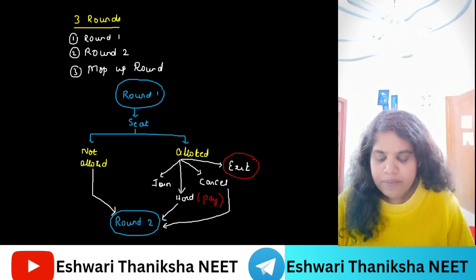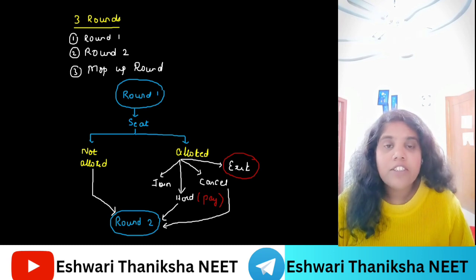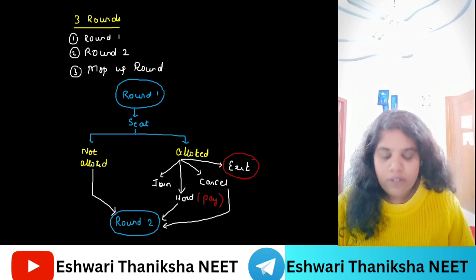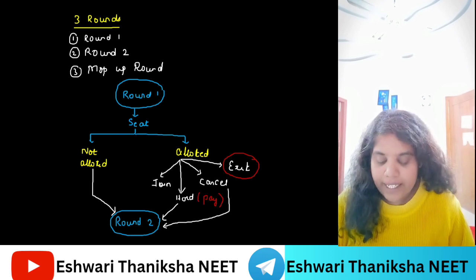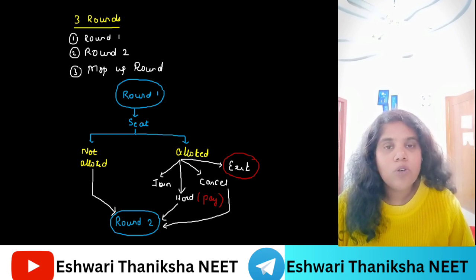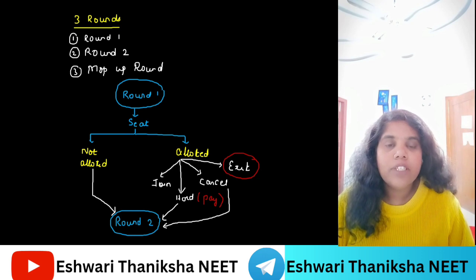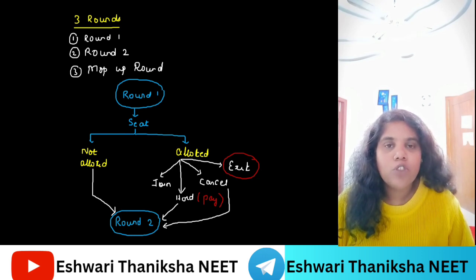In Round 1, if a seat is allotted to you, you have four options. If a seat is not allotted, then you can directly go to Round 2. Suppose a seat is allotted to you, there are four choices: Choice 1, Choice 2, Choice 3, Choice 4.